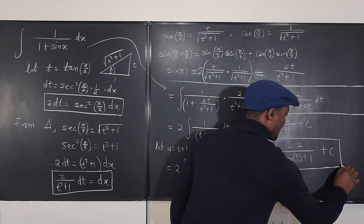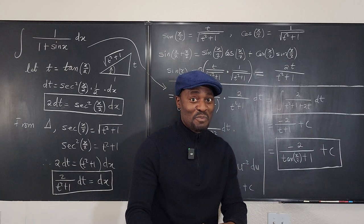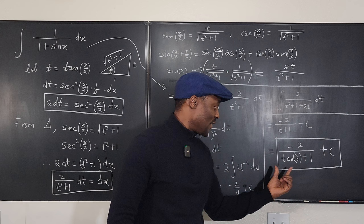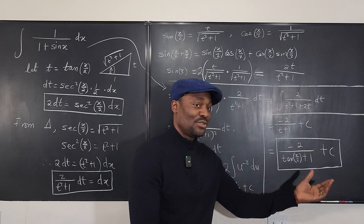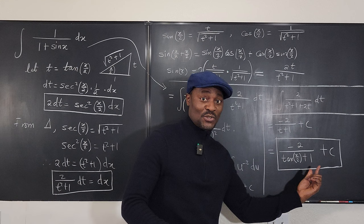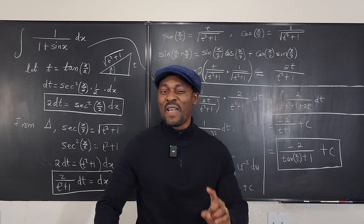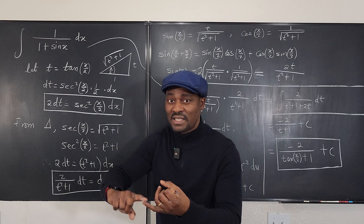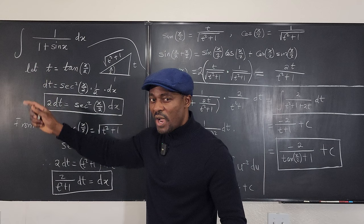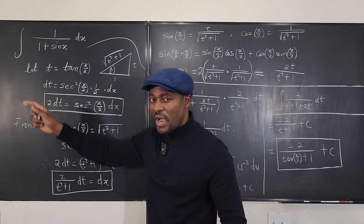You can leave the answer in terms of tan(x/2), or use trig identities to transform it further — writing tan(x/2) as sine(x/2) over cosine(x/2) and simplifying. Remember: the t-substitution works every time you have a linear combination of sine x and cosine x with a constant in the denominator. Try it for yourself. Never stop learning, because those who stop learning have stopped living.